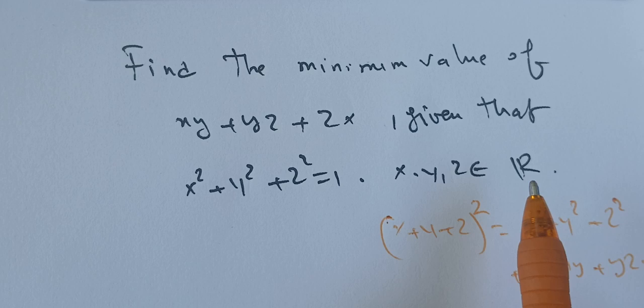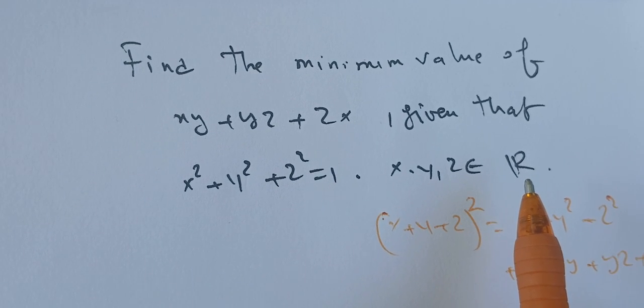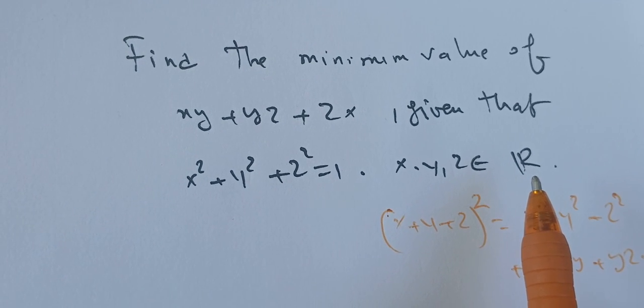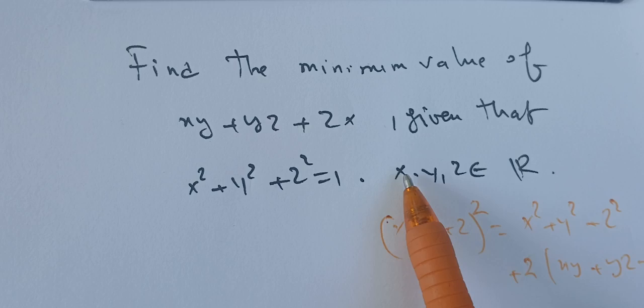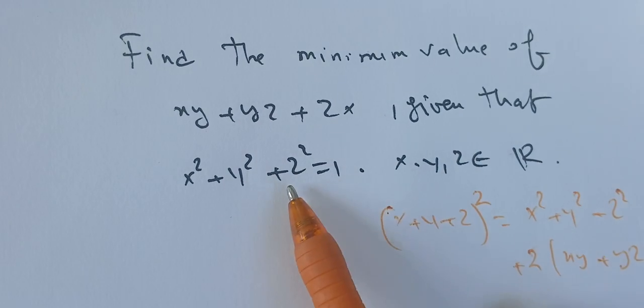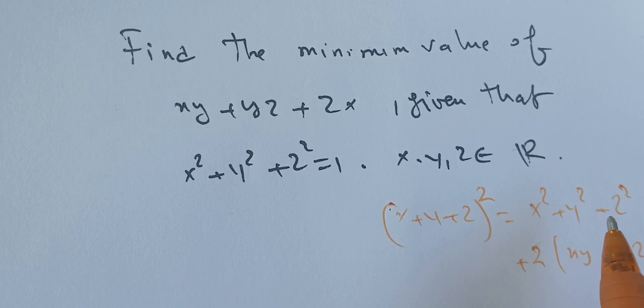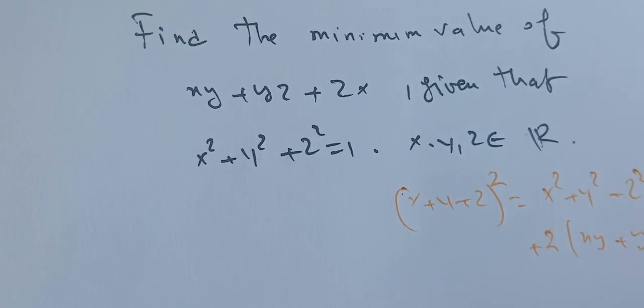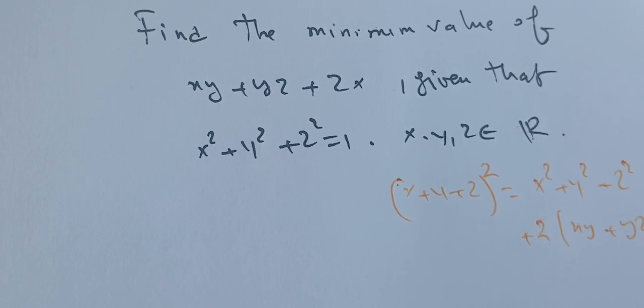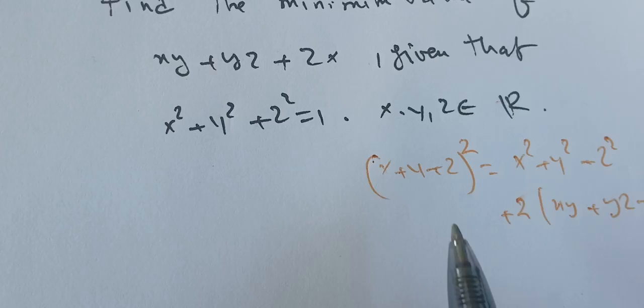From here we can find the minimum. We don't have any other condition except that x²+y²+z²=1. Here the idea that we're going to do is we're going to use some ordering in R.